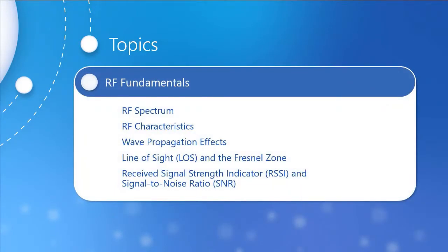As far as the main topics, we'll talk about the RF spectrum, the RF characteristics, wave propagation effects, line of sight, the Fresnel zone, and finally the received signal strength indicator and signal-to-noise ratio. These are all considered to be the basics of radio frequencies, and then we'll tie them into the Cisco equipment at our disposal.